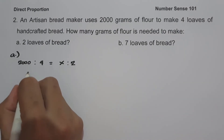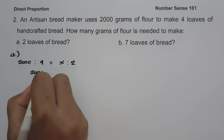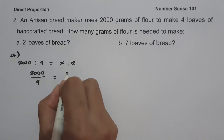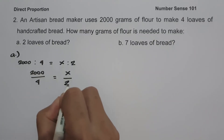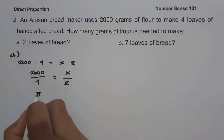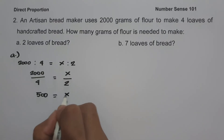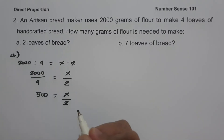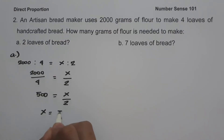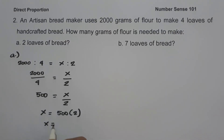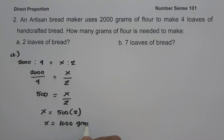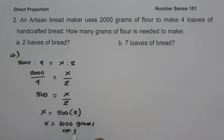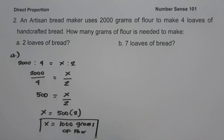So let us rewrite this one as 2000 over 4 equals X over 2. 2000 divided by 4, that is 500, equals X over 2. And to simplify, let us have X equals 500 times 2, and that is 1000 grams of flour. So this will be the number of grams of flour needed for 2 loaves of bread.